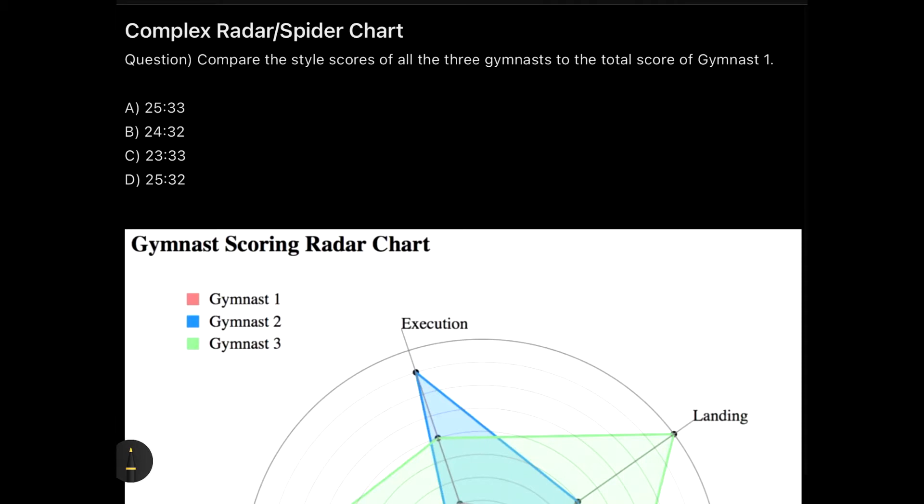Now over here we see that in the last data interpretation video we just learned about the basics of how to read a spider chart and convert the spider chart into a table chart. In this one, along with converting it into numbers, I will also be giving you a question to solve based on ratio.